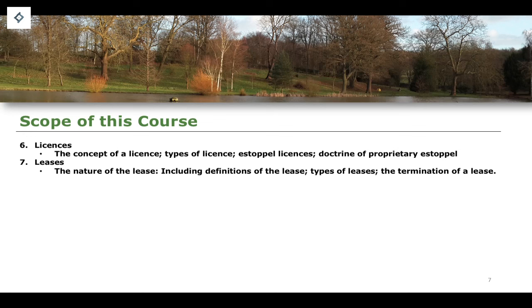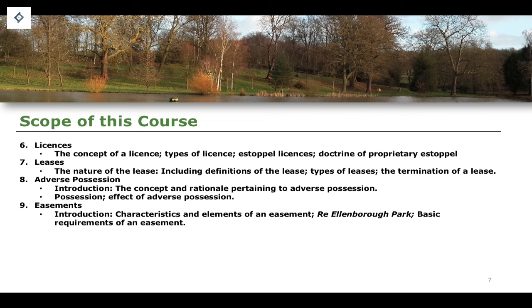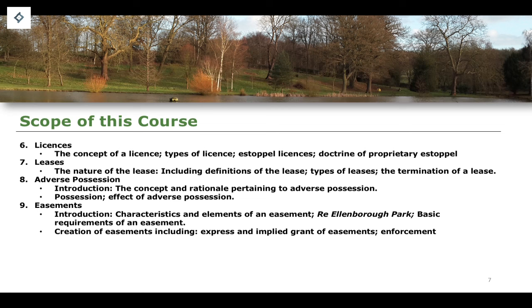Section eight will cover adverse possession — an introduction to the concept and rationale of adverse possession, followed by a more detailed look at possession and its effects. Section nine will look at easements — the concept, characteristics, and the definition of an easement as laid down in Re Ellenborough Park, as well as the basic requirements for the existence of an easement, including the creation of express and implied grants and the enforcement of easements, finishing with rules of prescription.